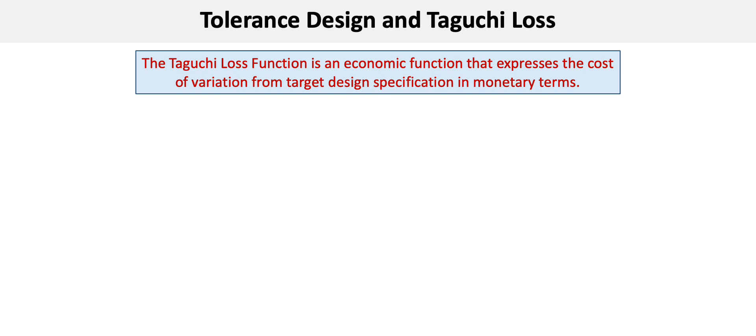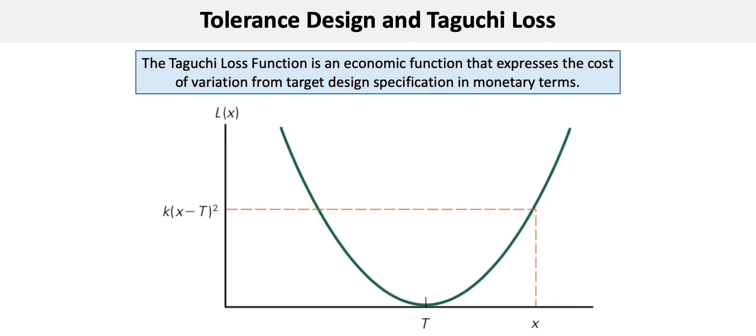Visually, the function is a parabolic curve where, when output meets target specification, there are no monetary losses. But when output deviates from the target specification, either more or less, the monetary losses increase exponentially.